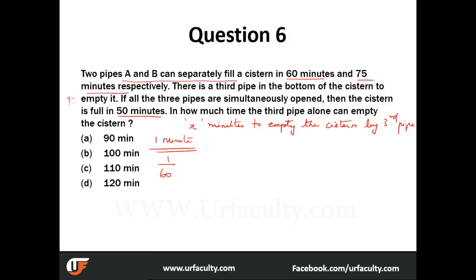We get 1/60 — which is pipe A — plus 1/75 — which is pipe B — minus 1/x — which is the third pipe, because it's emptying the cistern. And if all three pipes are simultaneously open and fill the cistern in 50 minutes, the combined rate equals 1/50.